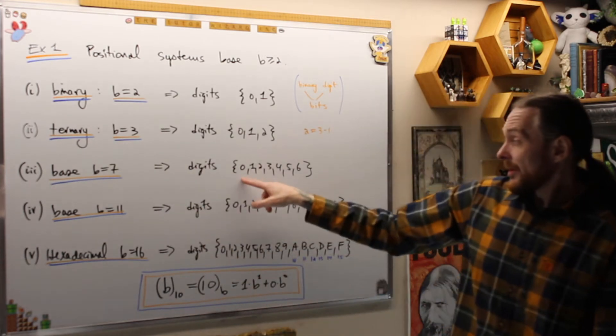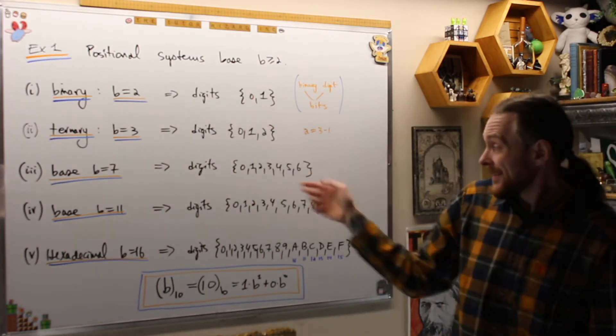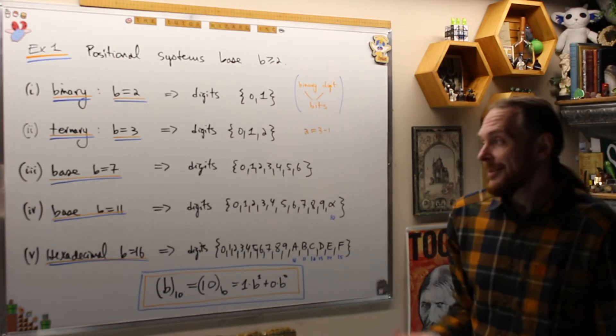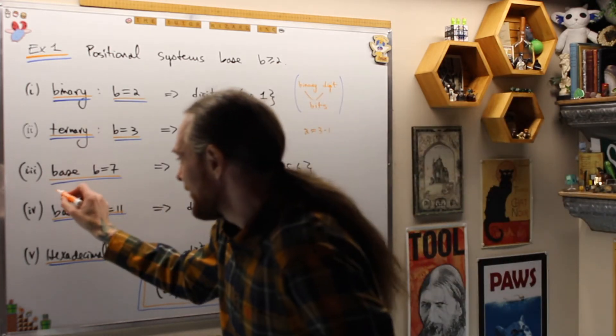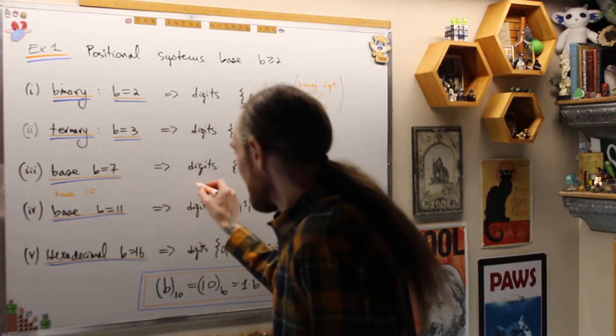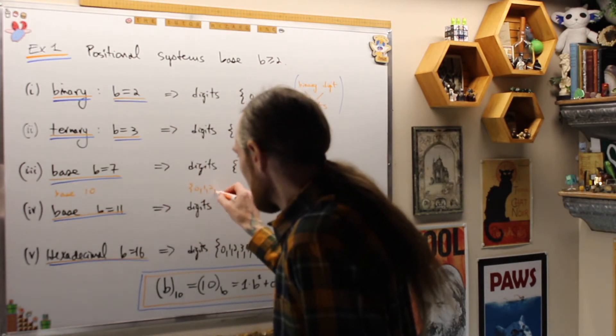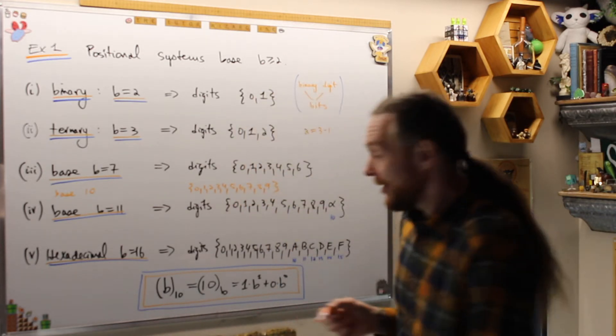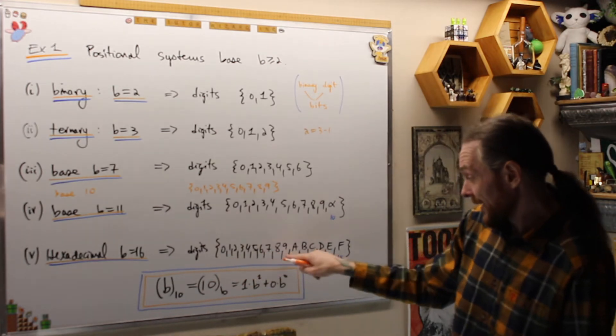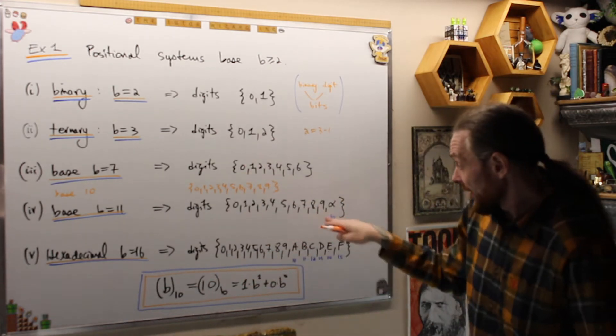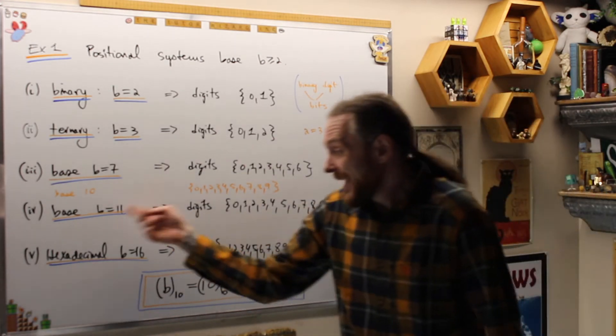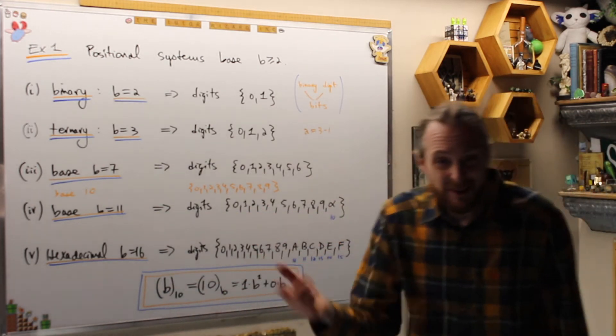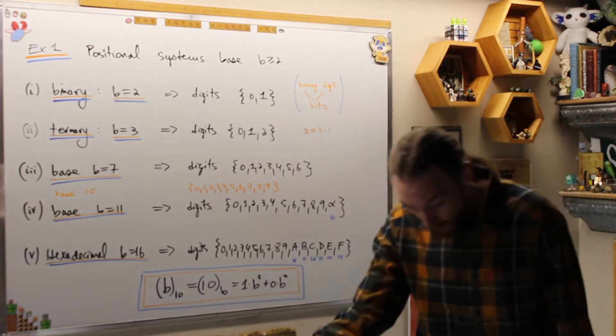So we always go from 0 to B minus 1. In base 7, which is still less than 10, we're going to use the digits 0 to 6. In classical base 10, base 10 is going to be 0, 1, 2, 3, 4, 5, 6, 7, 8, 9, the Hindu-Arabic symbols. They're actually also right here and one that's larger.